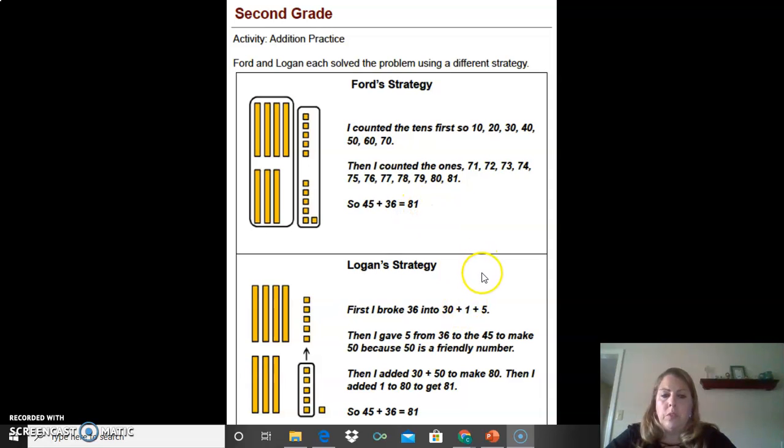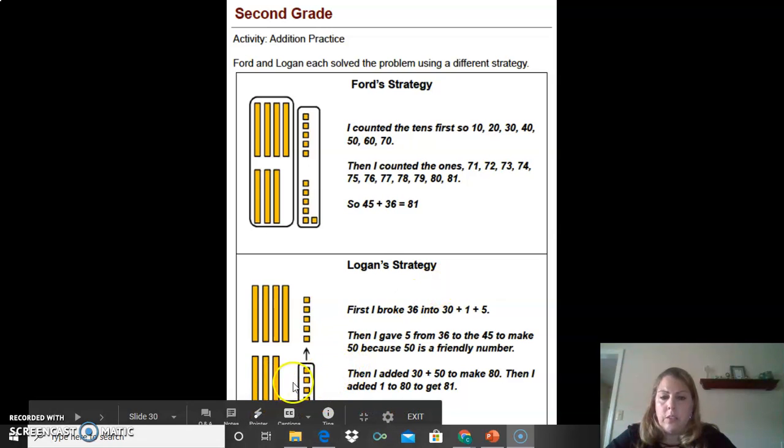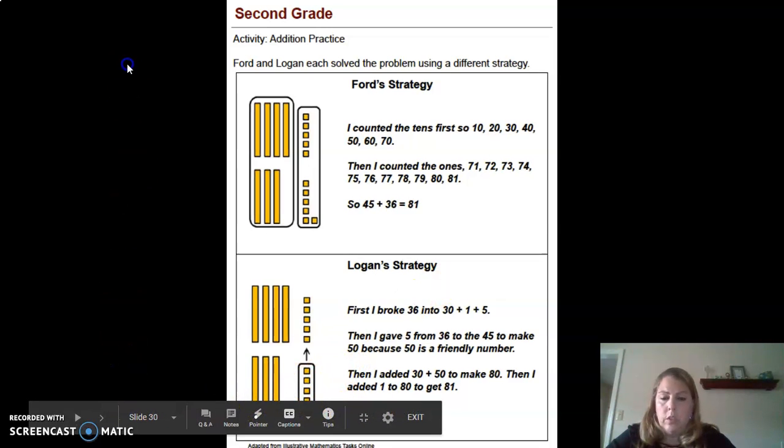Logan's strategy was a little bit different. First, Logan took 36, which is down here at the bottom. We see 10, 20, 36.